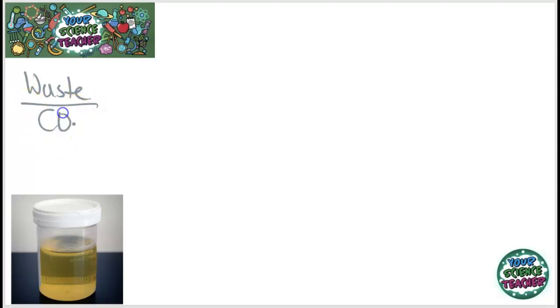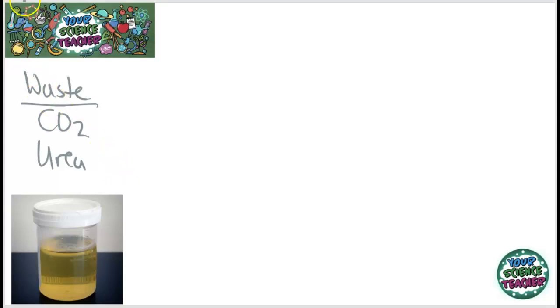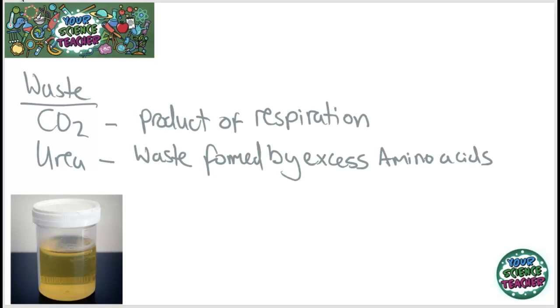The next thing we look at is how we control the amount of waste products in the body. There are two main waste products: carbon dioxide, which is a waste product from respiration, and urea, which is formed from the breakdown of amino acids in the liver. In high enough concentration, urea is incredibly poisonous, but luckily it is filtered out by our kidneys.